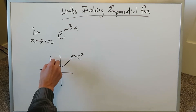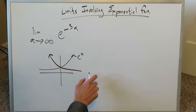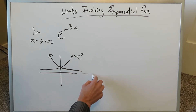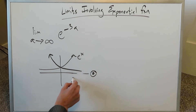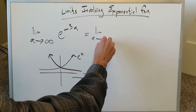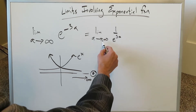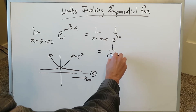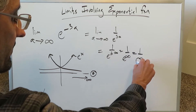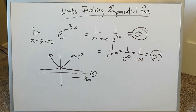E to the minus x would be a reflection of e to the x across the y-axis. As any function goes in that direction towards infinity, it goes along the x-axis and eventually zeros out. Just by looking at the graph we know it approaches 0. To show it: we write the limit as a approaches infinity of 1 over e to the 3a, plug in infinity, and get 1 over infinity, which zeros out. The answer is 0.